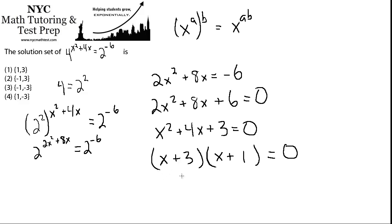And then to get the final solutions, we just have to set each of these factors equal to 0. And if we do that, we'll find out that x could equal negative 1, or it could equal negative 3. And that corresponds to answer choice number 3.